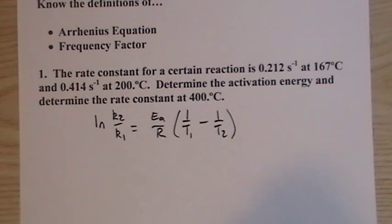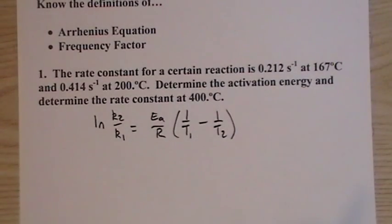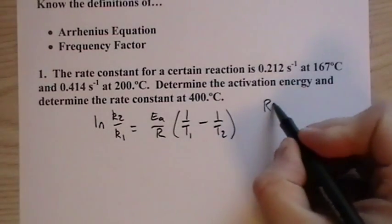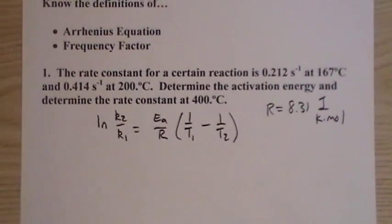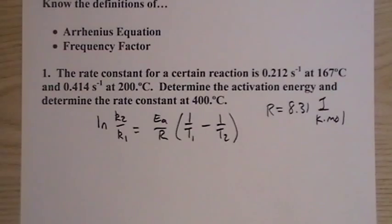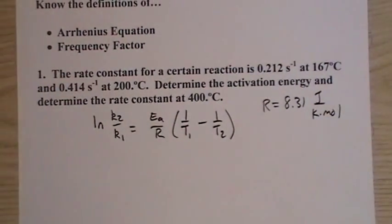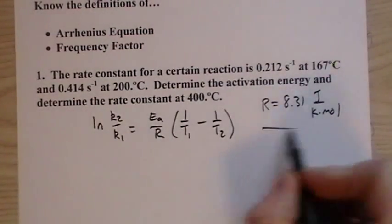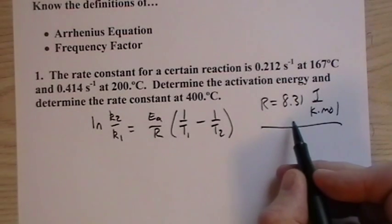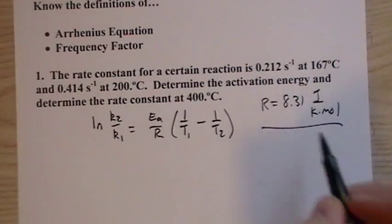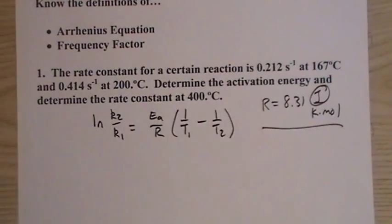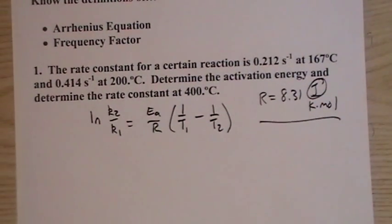Now the r value that we use, since we're dealing with energy, our r value is going to be 8.31 joules per k mol. Now this is the same gas constant as that 0.0821 liters atmospheres per k mol. It looks different because we're using different units. We need those joules because activation energy is energy, it's in terms of joules.